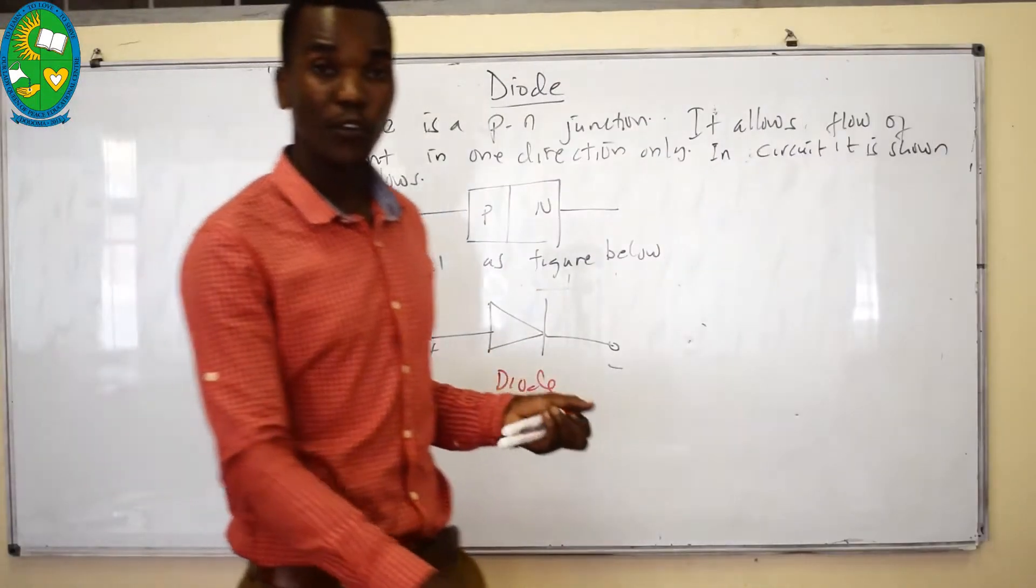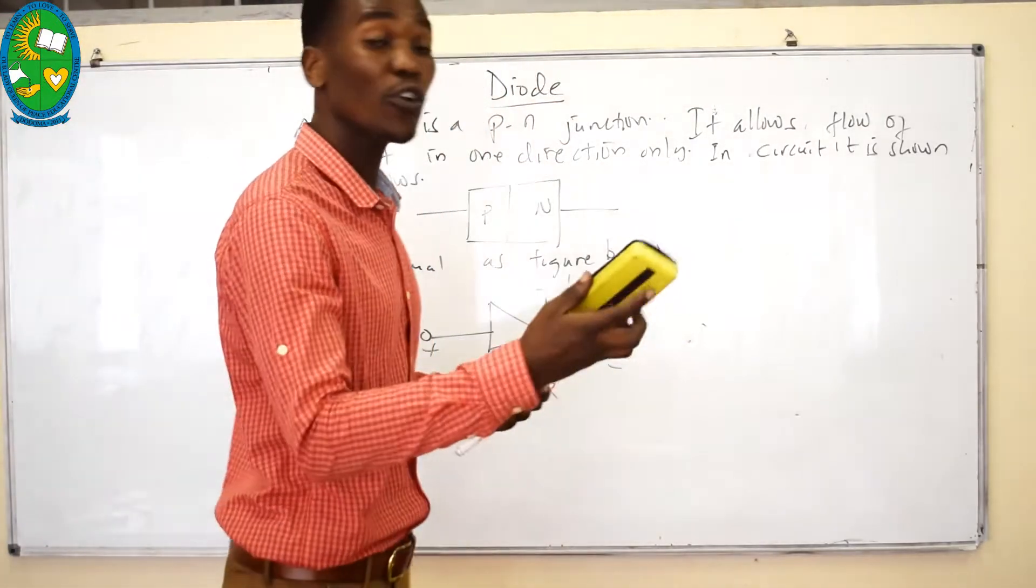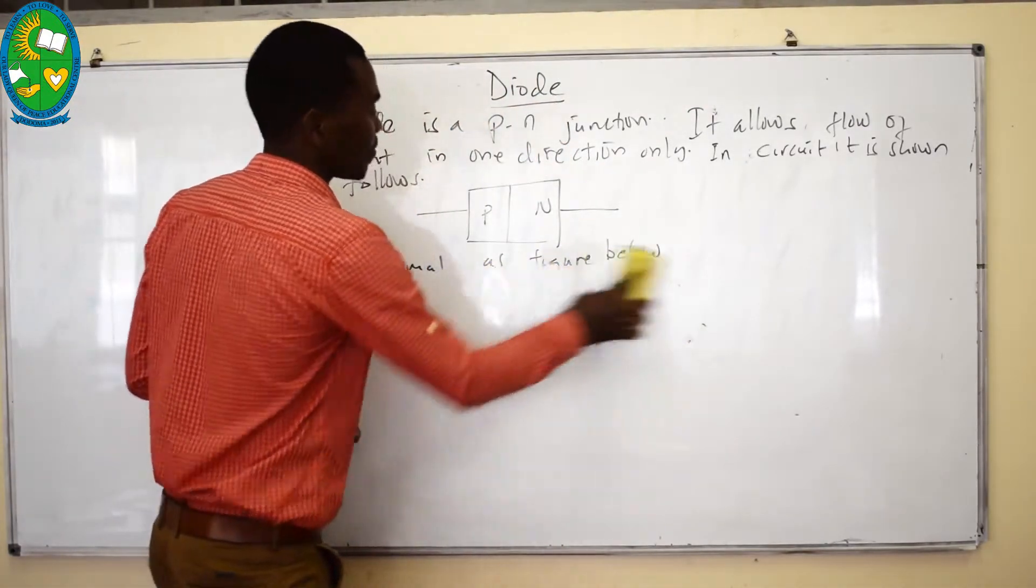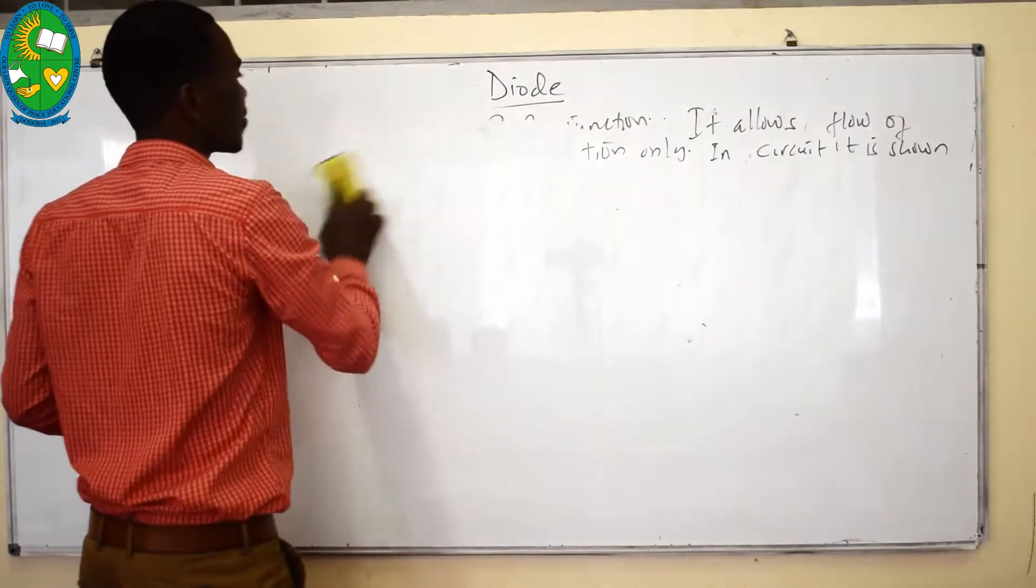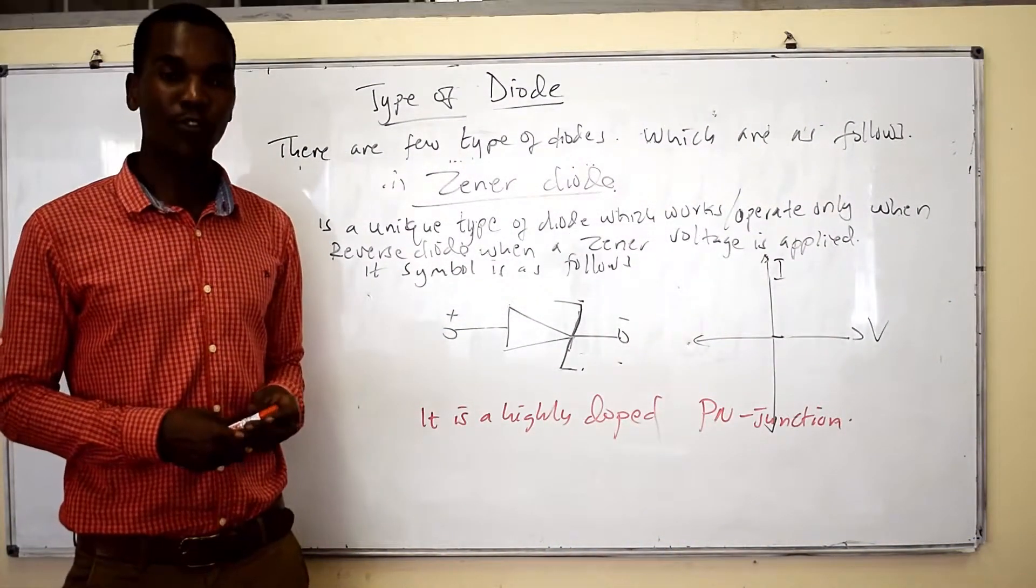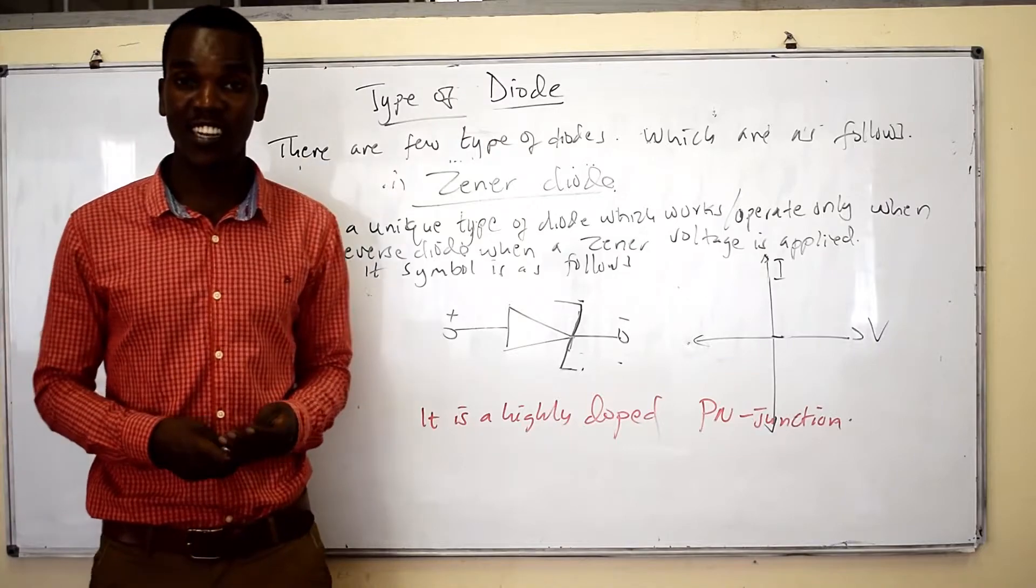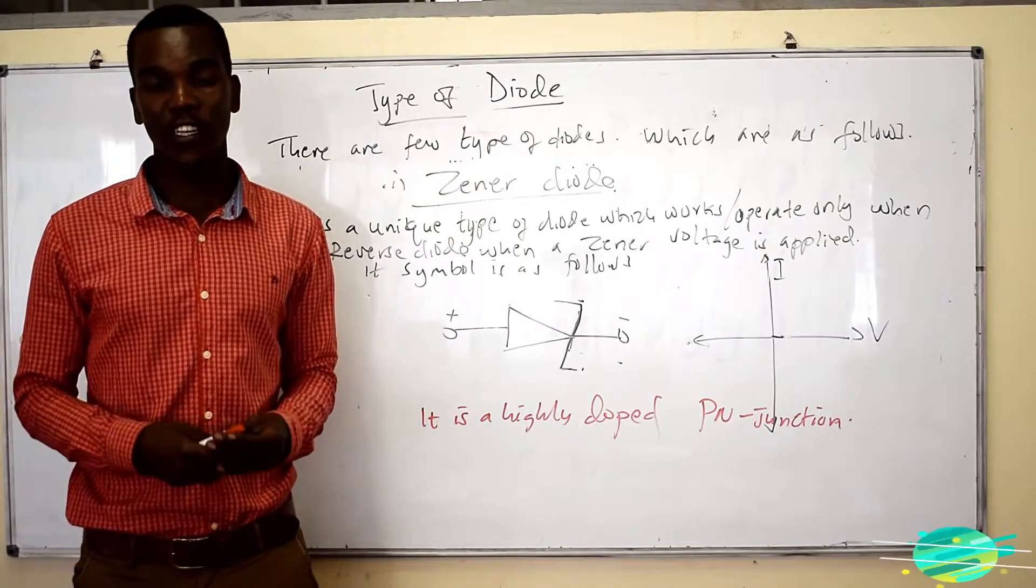There are a few types of diodes according to the use. The following are the types of diodes: the Zener diode. This Zener diode is named after Clarence Zener who discovered the Zener effect.